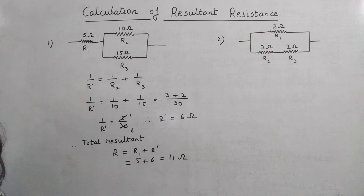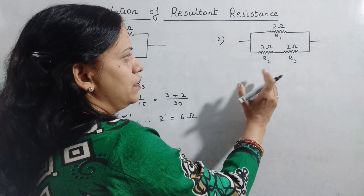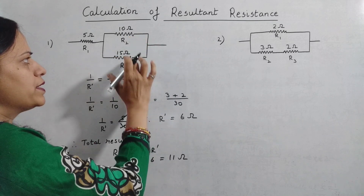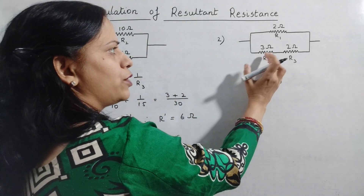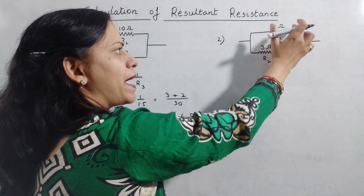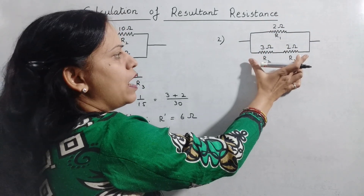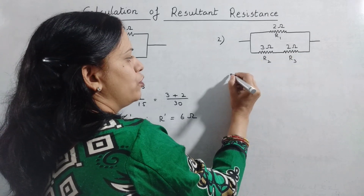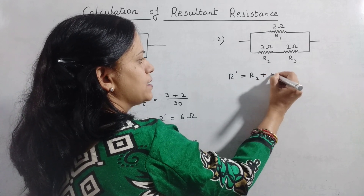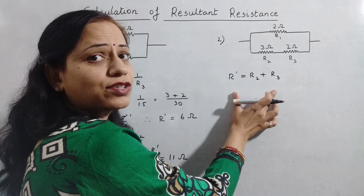Let's take up one more question — the second question. The circuit has been drawn on the board. This is somewhat different from the previous question. Here, two resistors are in series and their resultant is in parallel with the third one. So first we will find the resultant of R2 and R3, which are in series. The resultant R' will be R2 plus R3.